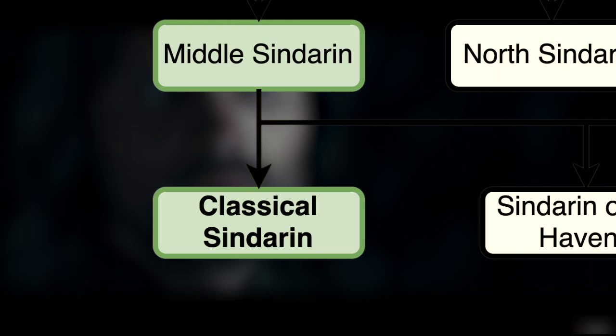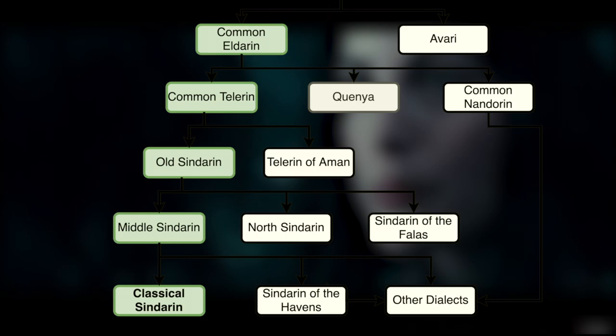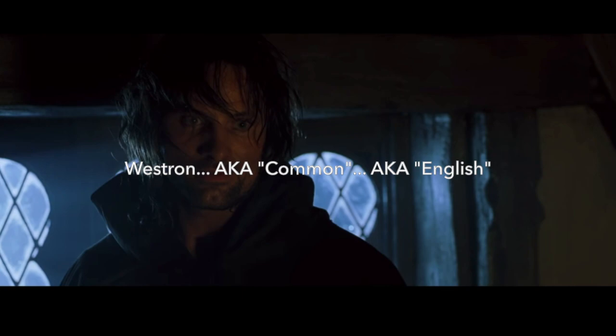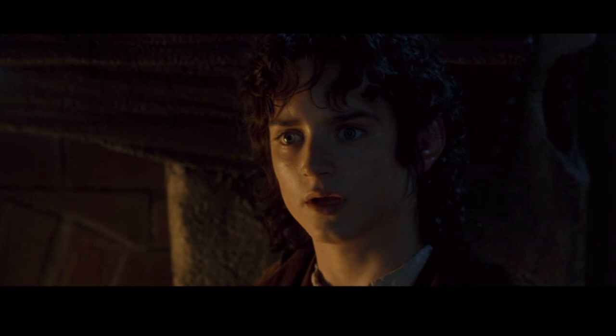So back to the language: the common tongue of the Sindar was Sindarin. This was also the most prominent language among the rest of the elves and the rangers who lived in Middle-earth during the Third Age. So, even though Westron was the most common language in Middle-earth overall, Sindarin was by far the most commonly spoken dialect of Elvish at this time.